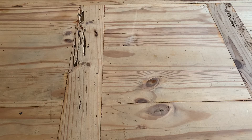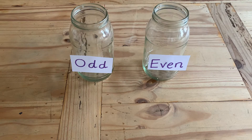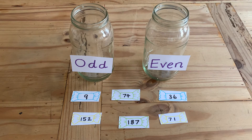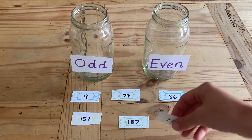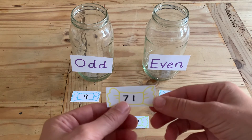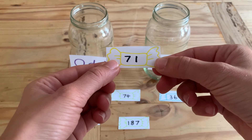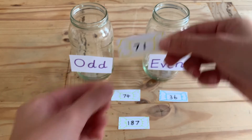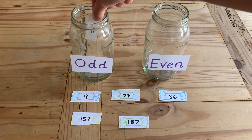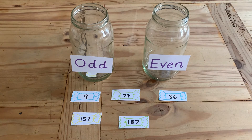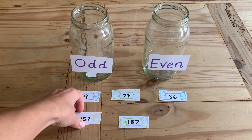You could even recreate this resource in the classroom or at home. All you'll need is two empty jars and to write some numbers on a piece of paper and cut them out. Can your children sort the sweets into the correct jar?